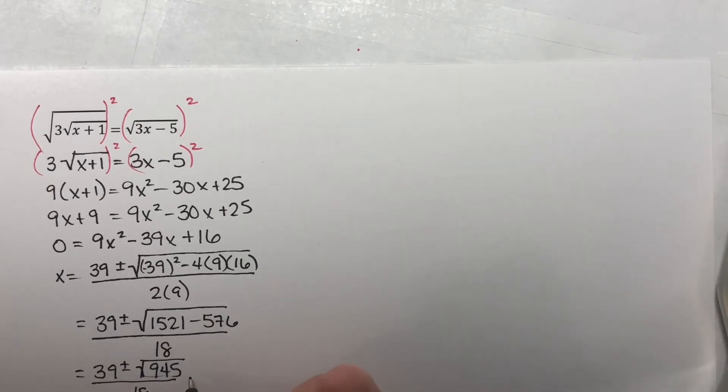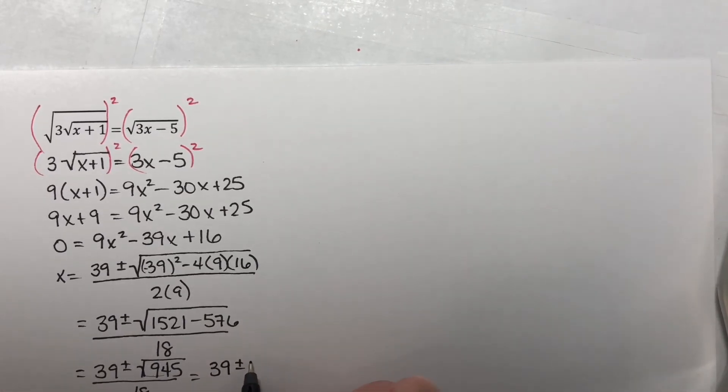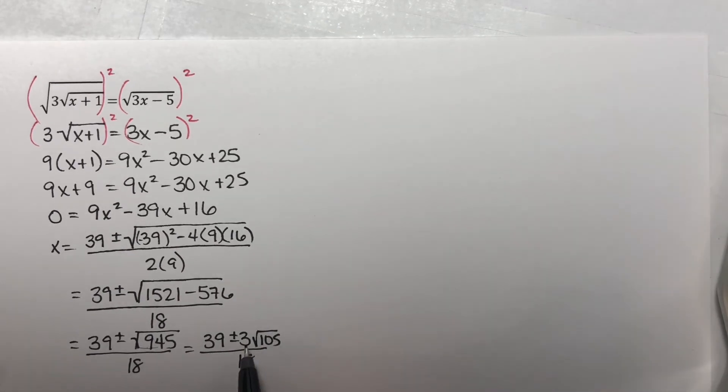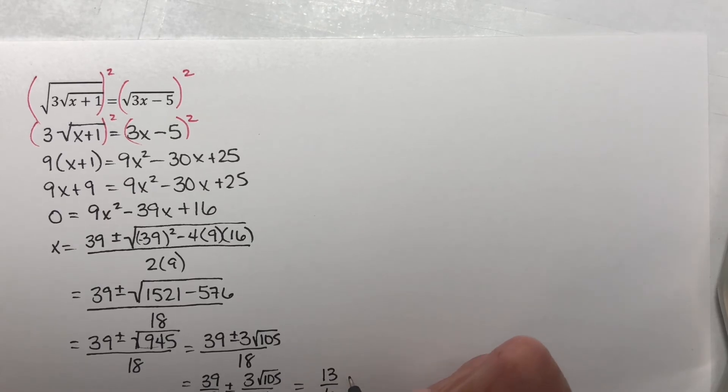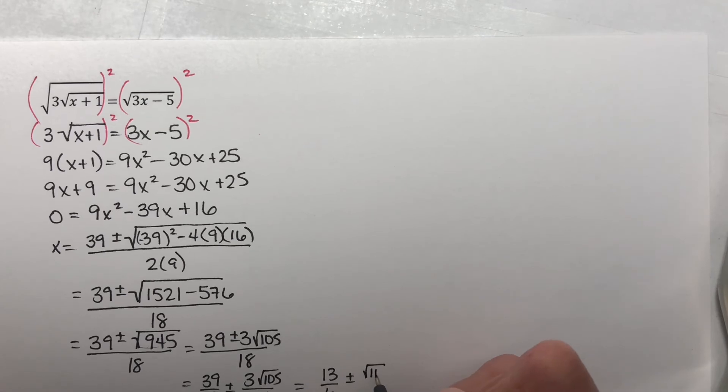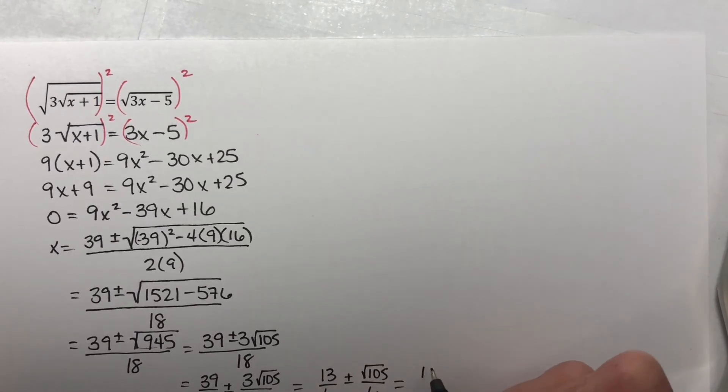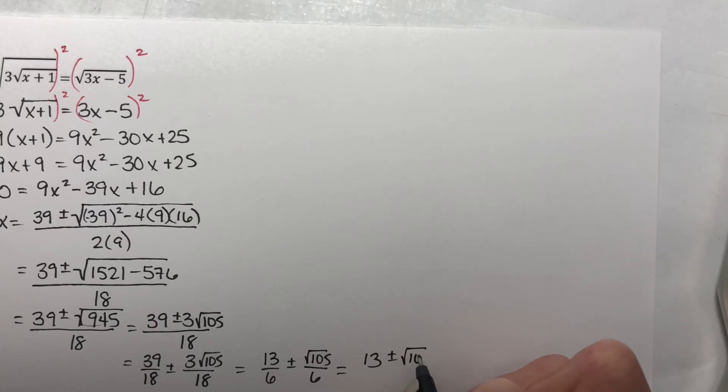And then if you simplify this square root, 39 plus or minus, this is 3 times the square root of 105 over 18. And then you can either think of this as factoring out a 3 and then reducing that with an 18, or you could think of it as writing it as 39 over 18, plus or minus 3 square root of 105 over 18, and then reducing each one. 39 over 18. Both of those are divisible by a 3 to give 13 over 6, plus or minus the 3 and the 18 reduce again to 105 over 6, which normally you would see like this, 13 plus or minus the square root of 105 over 6.